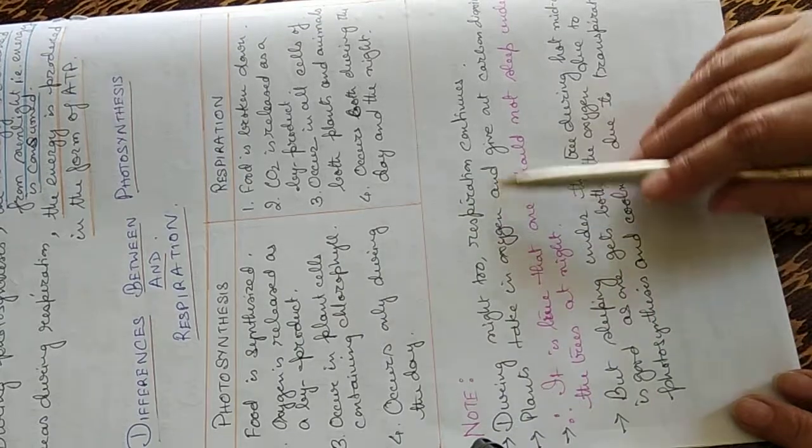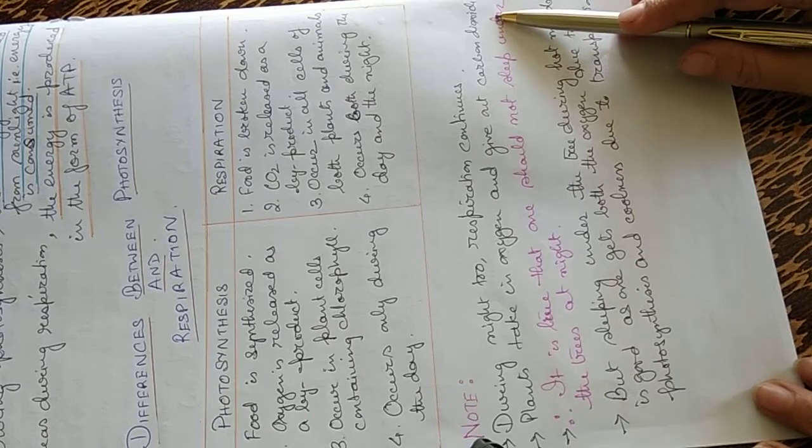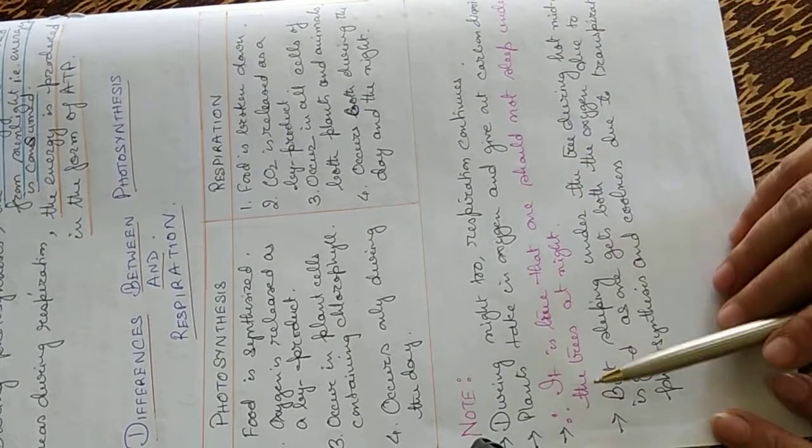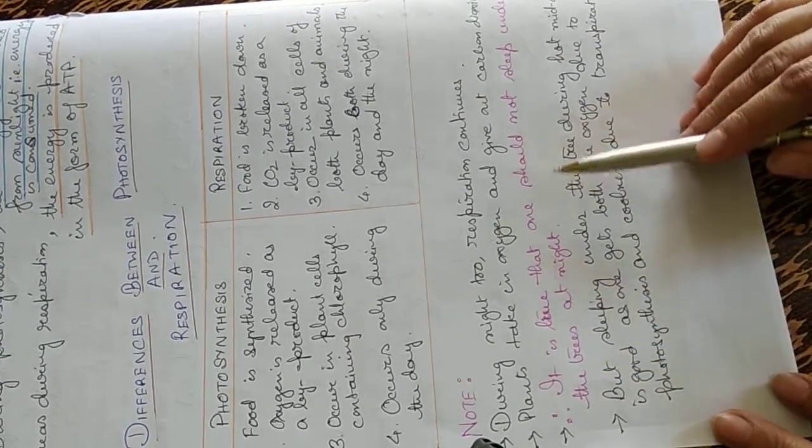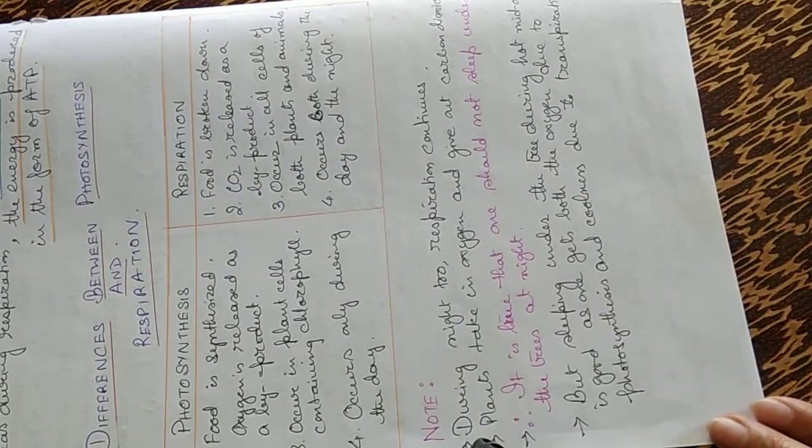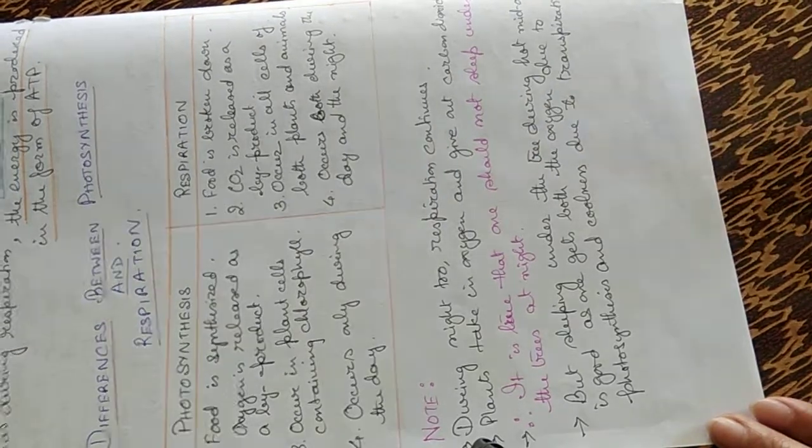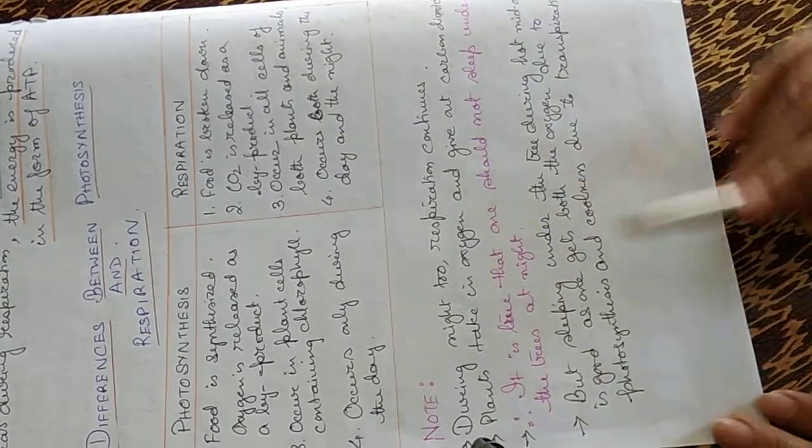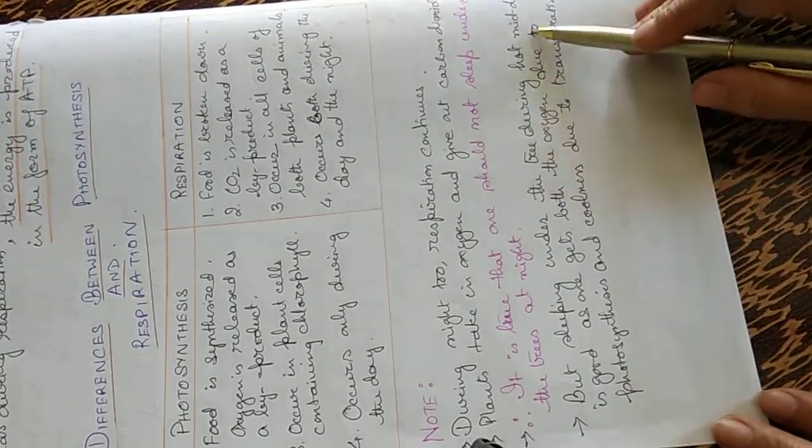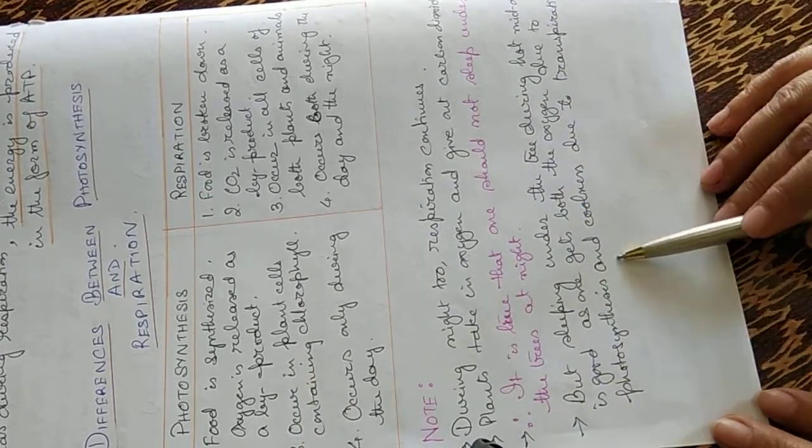There's a note: during night too, respiration continues. Plants take in oxygen and give out carbon dioxide generally in the night. So it is very true that one should not sleep under the trees at night because the plants give out carbon dioxide which is harmful for a person who sleeps below the tree. But sleeping under the tree during hot midday is good as one gets both oxygen due to photosynthesis and coolness due to transpiration. This is the end of this chapter.